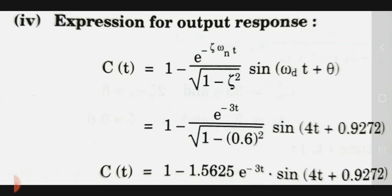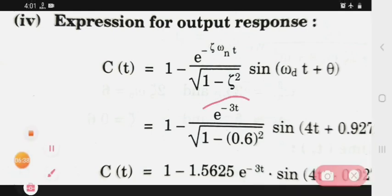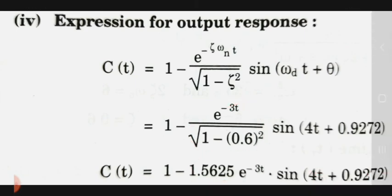Last you have to find the expression for output response. This is also a formula: C(t) = 1 - [e^(-ζωnt)/√(1-ζ²)]sin(ωdt + θ). In this all values you know - eta is known, omega n is known, omega d is known, and theta is known. You have to put all these values and this portion you have to solve. After solving, whatever value you get, you write that, and the rest of the equation you write as it is. Then this will be your expression for output response.